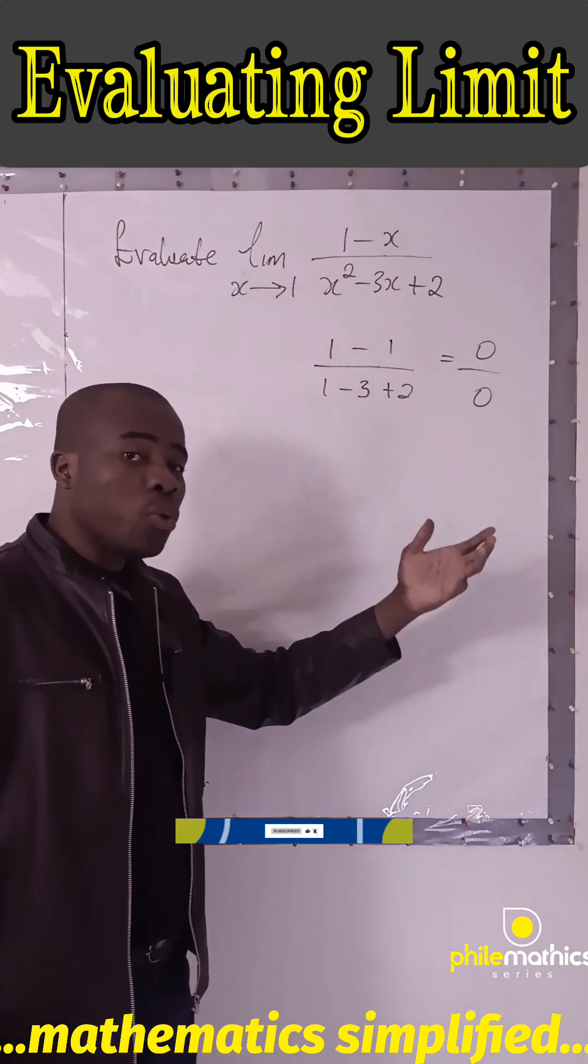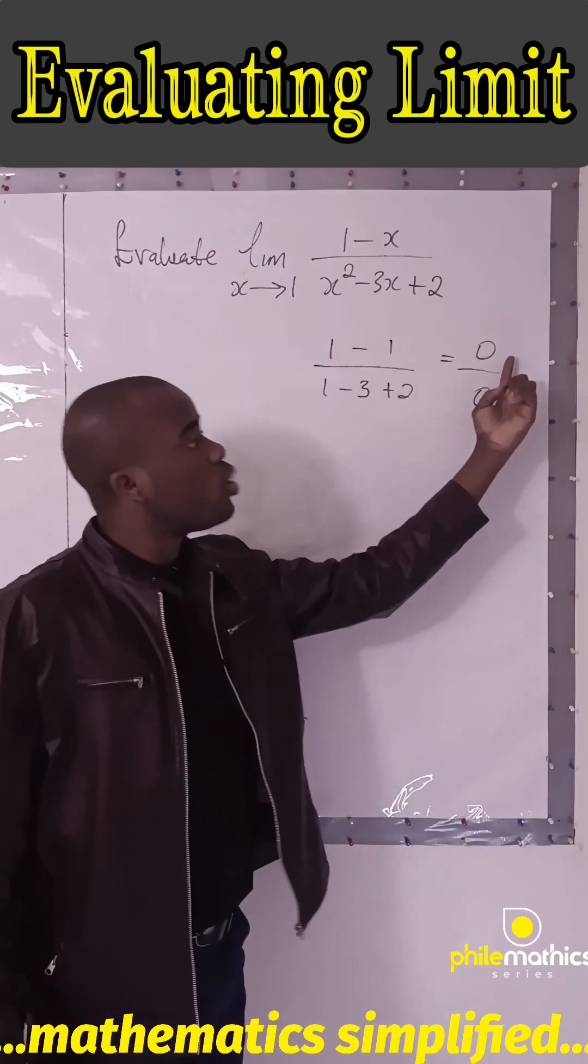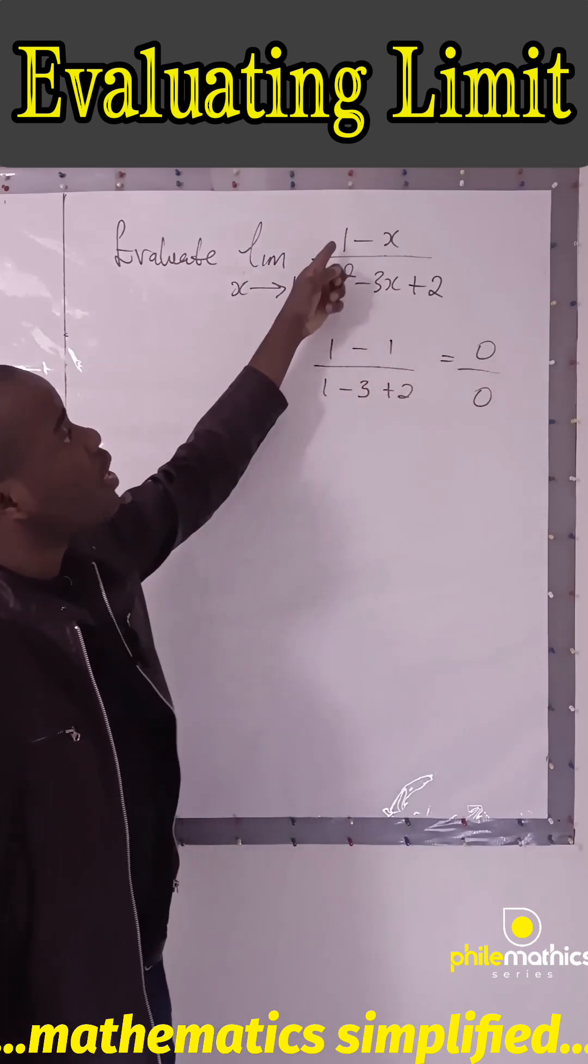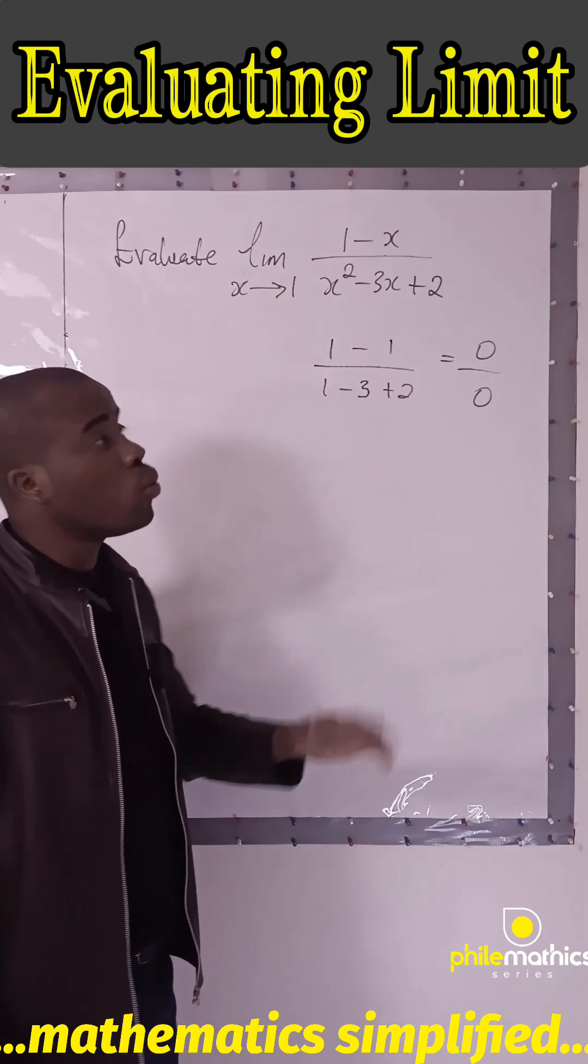The second method we want to use is L'Hôpital's rule. L'Hôpital's rule says if we have a situation like this, we can differentiate the numerator and the denominator separately. This is different from the quotient rule.